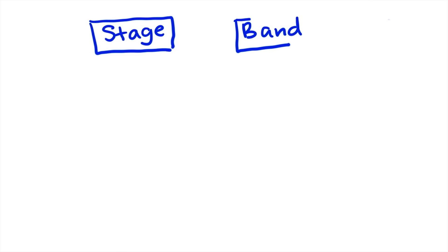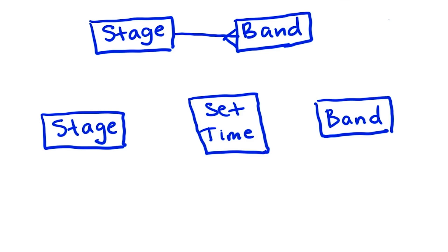Before, we had just stages and bands, and the relationship had that little line with the three forks at the end — our stage had many bands. But now we have stages, bands, and this junction object called set time. How do you think that this relationship will look when mapping it out?